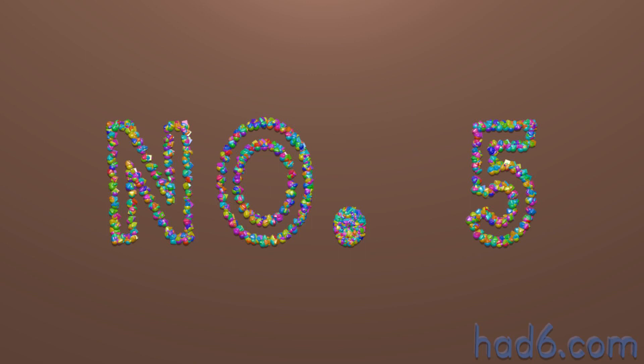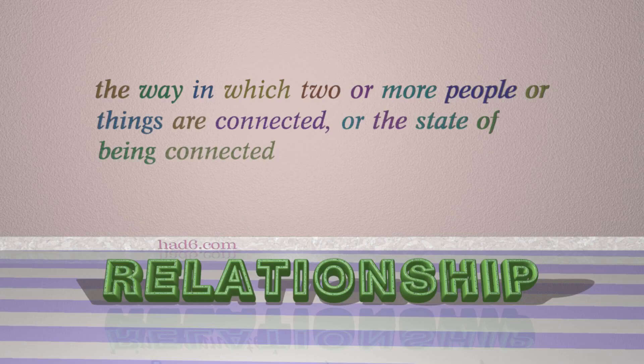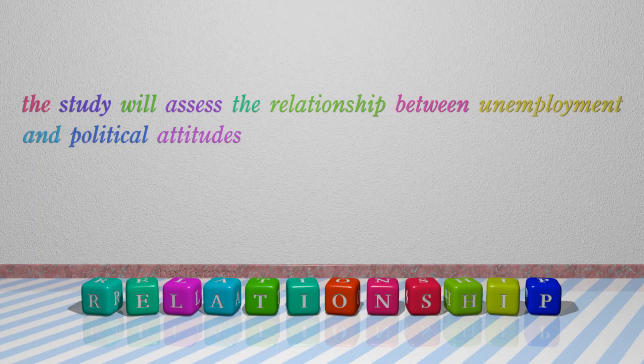Number 5: Relationship. Which means the way in which two or more people or things are connected, or the state of being connected. For example: The study will assess the relationship between unemployment and political attitudes.